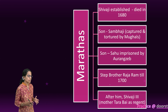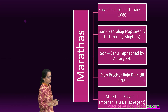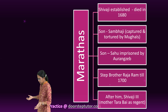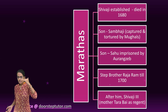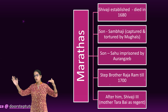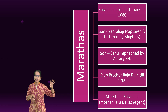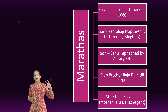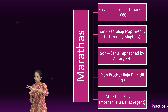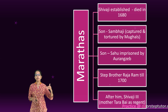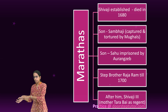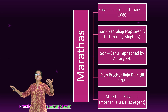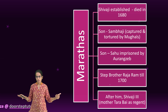The Marathas and their history are exceptionally important. Shivaji established the Maratha kingdom, but during the rule of Aurangzeb, Shivaji died in 1680 and was followed by his son Shambhaji. Shambhaji was captured and tortured by the Mughals. Then his son Sahu came, who was again imprisoned by Aurangzeb. As Sahu was imprisoned, his stepbrother Raja Ram came to power.